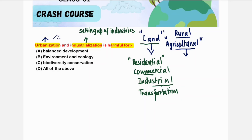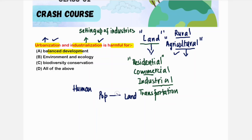Both urbanization and industrialization are harmful. First, they disturb the balanced development — the proportion of land available for agriculture was sufficient for food needs, but by converting that land we are destroying this balance.